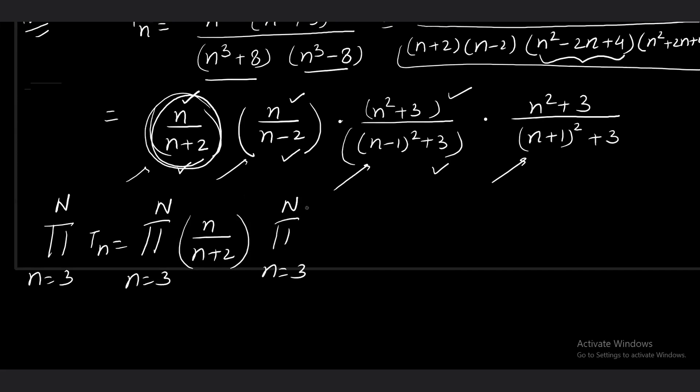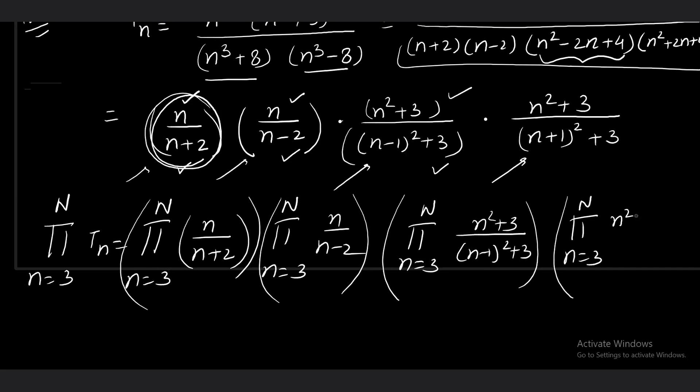Second product separately: n/(n - 2). Third product: from 3 to N, numerator n² + 3, denominator (n - 1)² + 3. And the last one: product from 3 to N of (n² + 3)/(n + 1)² + 3. This is what we will be getting.